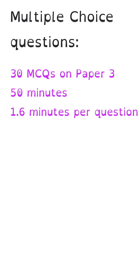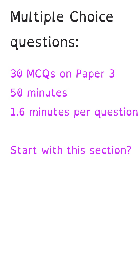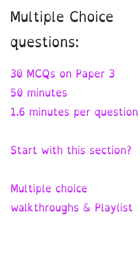There are always 30 multiple choice questions on paper 3, and it's recommended you spend 50 minutes in total on them — about 1.6 minutes per question, though some take longer and some take less. If multiple choice is a particular weakness, it might be a good idea to start with those questions so you can spend that dedicated 50 minutes on them. If you feel weak on these, check out some of my multiple choice question videos — I've made a playlist and a link will be in the description.